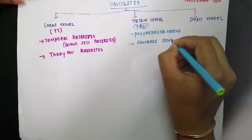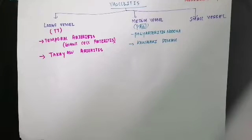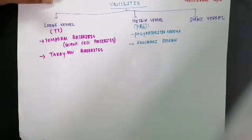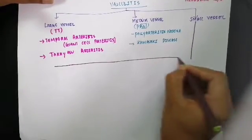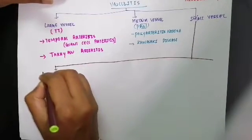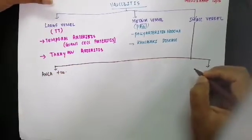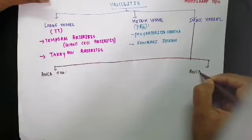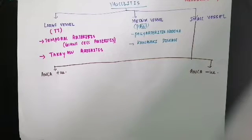Small vessel vasculitis includes a larger number of conditions. These are divided into ANCA-positive vasculitis and ANCA-negative vasculitis.